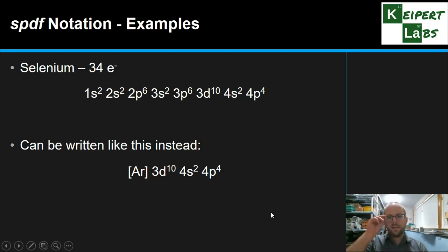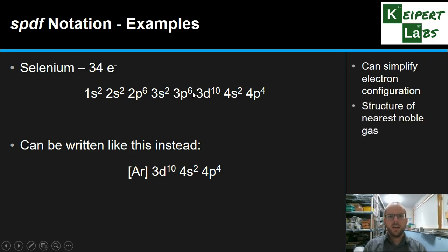Okay, so now, with our selenium, so what we notice, if we rewrite it over here, is that we can say, well there's actually a whole bunch of a shortcut that we can write because this whole, and simplify it, by looking at the structure of the nearest noble gas. So we see this section in red here is the same electron configuration as we have for argon.